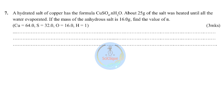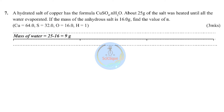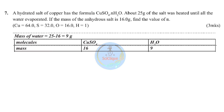Question seven: a hydrated salt of copper has the formula CuSO₄·nH₂O. About 25 grams of the salt was heated until all the water evaporated. The mass of the anhydrous salt is 16 grams — find the value of n. The whole hydrated salt was 25 grams; after heating only copper(II) sulfate remains at 16 grams. The mass lost through evaporation — the mass of water — is 9 grams.